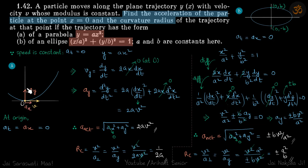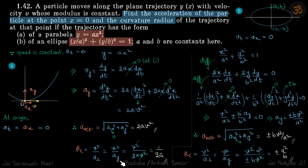This acceleration is the normal acceleration. The net acceleration is the square root of ax squared plus ay squared, and since ax is 0, a_net becomes 2av squared, same as ay. The radius of curvature is v squared divided by the perpendicular acceleration. At this point, a_perpendicular is ay, so radius of curvature equals v squared divided by 2av squared, which simplifies to 1 divided by 2a.